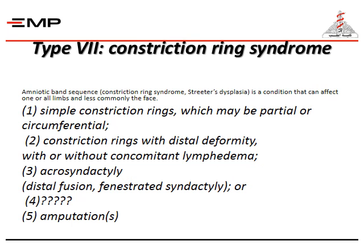Type seven is the constriction ring syndrome, also called Streeter's dysplasia or more commonly amniotic band sequence — a condition that can affect one or all limbs and less commonly the face. It presents as simple constriction rings, which may be partial or circumferential, constriction rings with distal deformity with or without lymphedema, acrosyndactyly (distal fusion and fenestrated syndactyly), or even amputations.